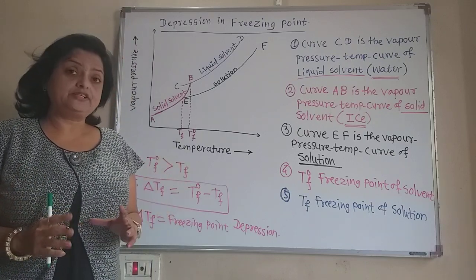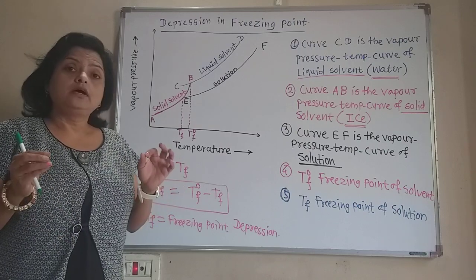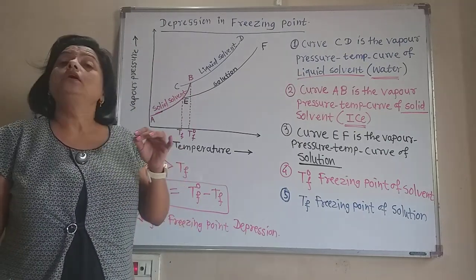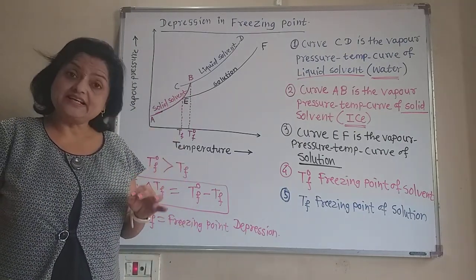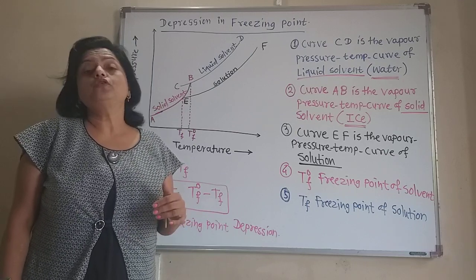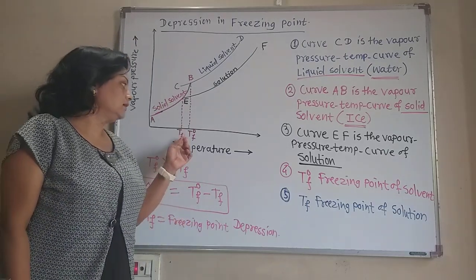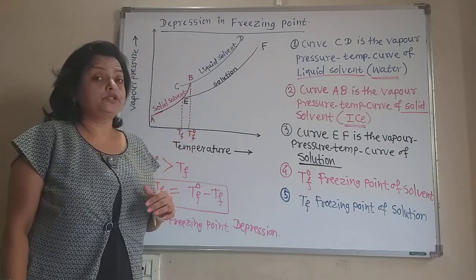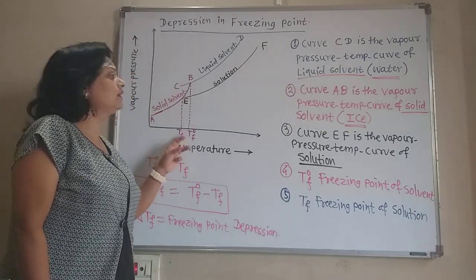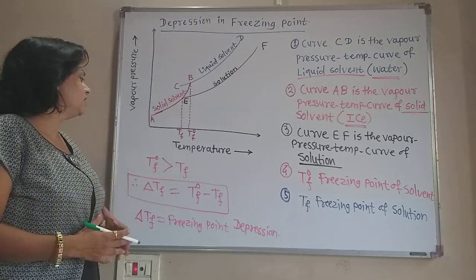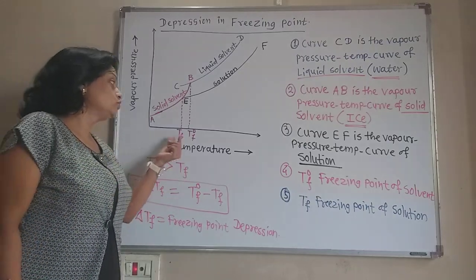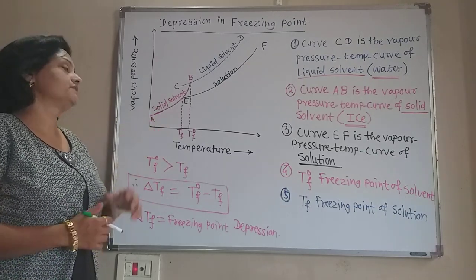Depression means decrease — the freezing point decreases when we add solute into the pure solvent. That means the freezing point of the pure solvent is higher than that of the solution. Why does that happen? We will describe why the freezing point of the liquid solvent is always higher than that of the solution using vapor pressure-temperature curves.